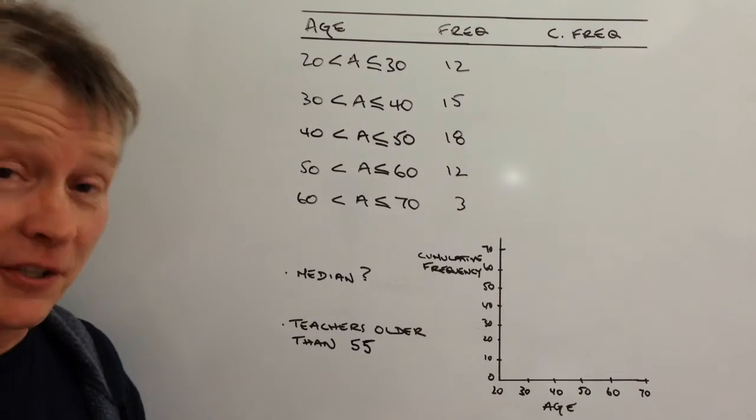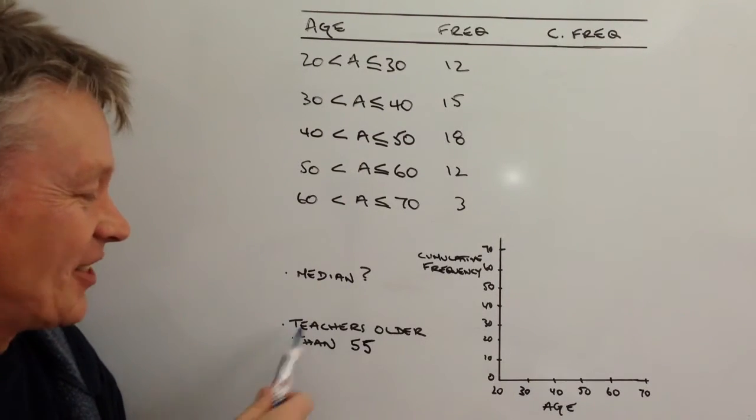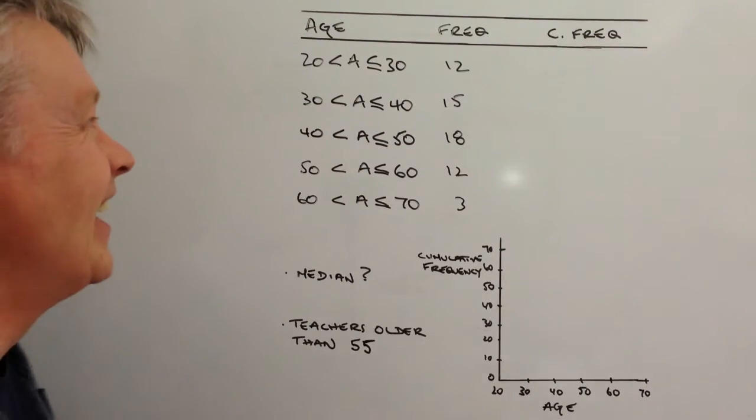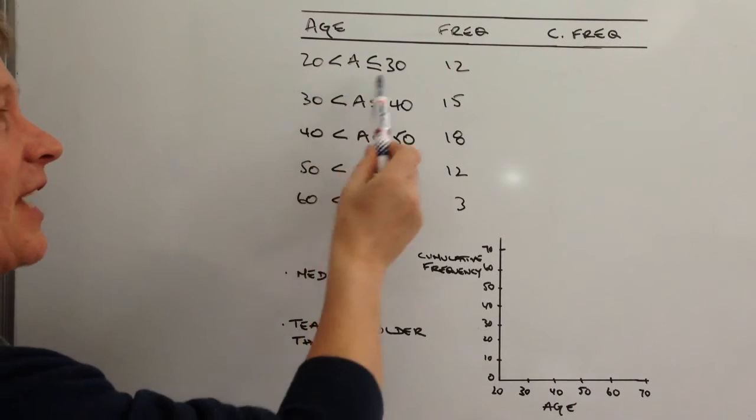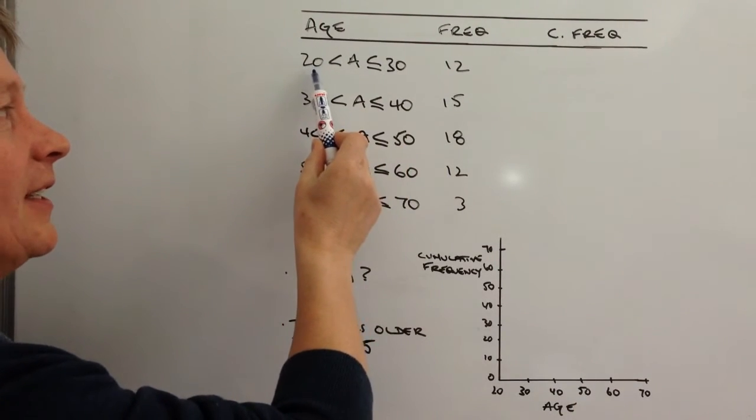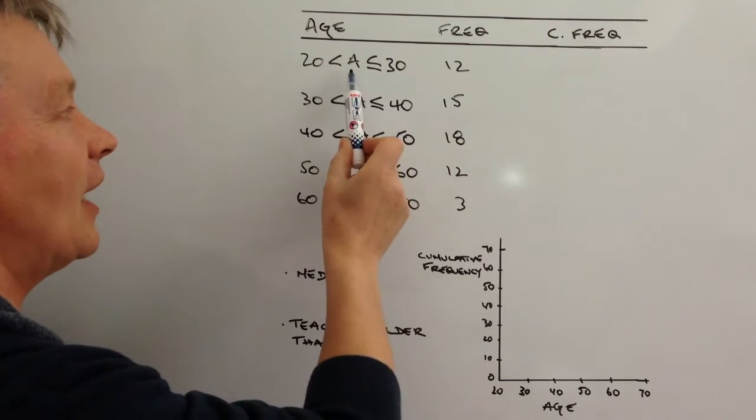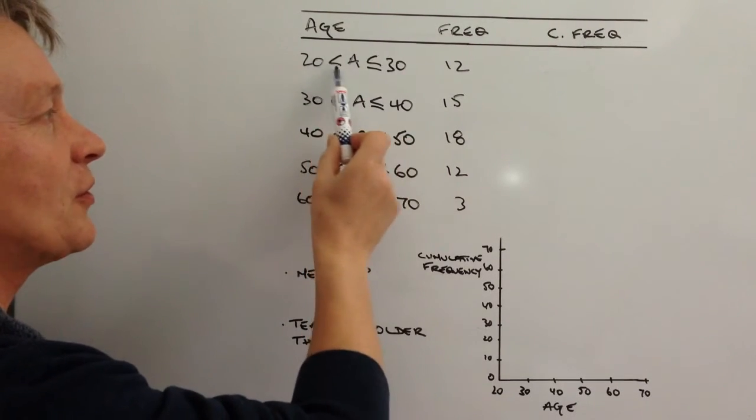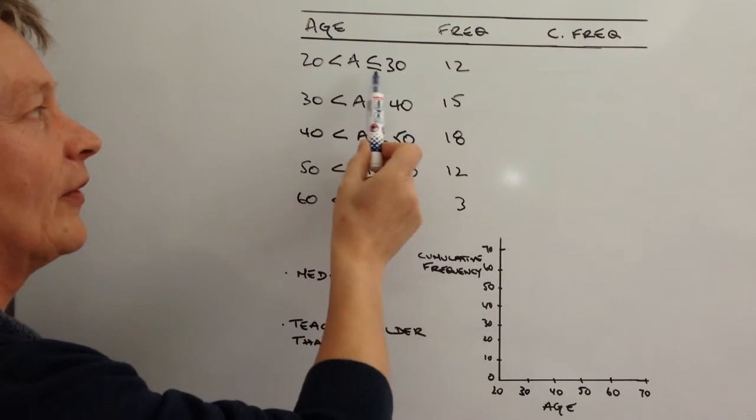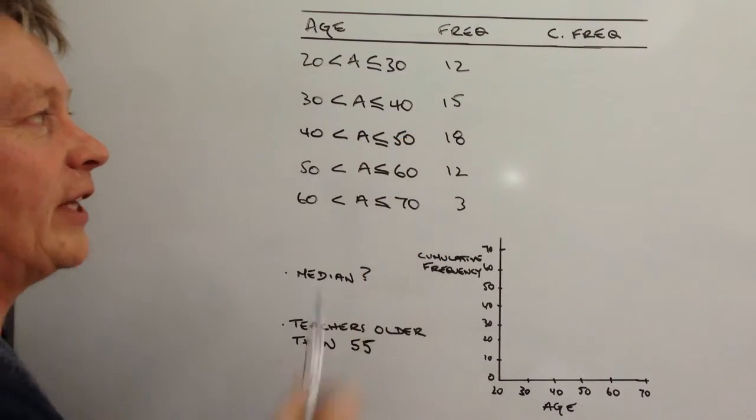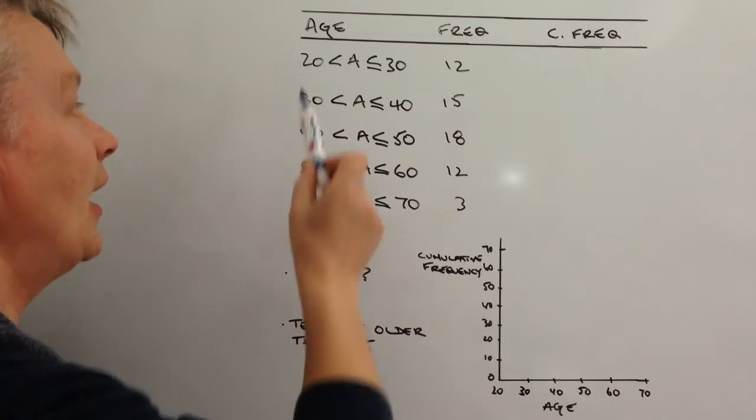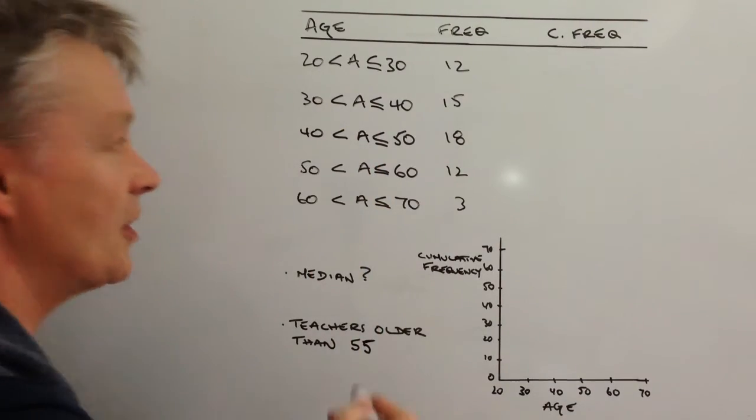Teachers older than 55, doesn't include me. Okay, so the first one is we've got this age range here of 20 to 30, and what we're saying is that the age of the people within this group, of which there are 12, is less than or equal to 30 and above the age of 20. So there's still 12 people in that particular group.